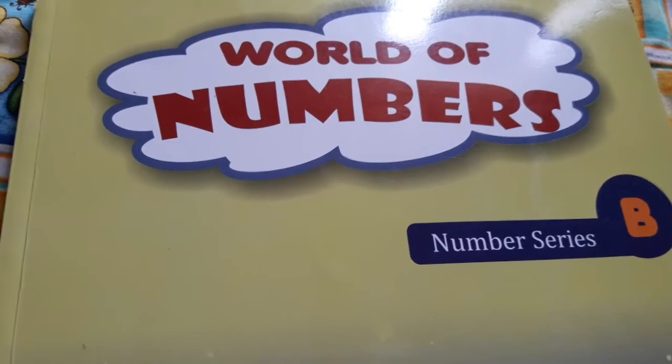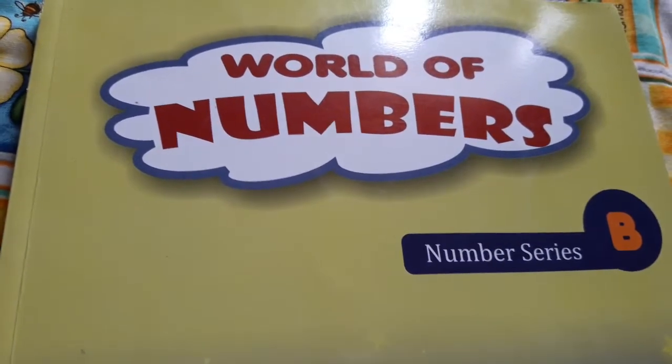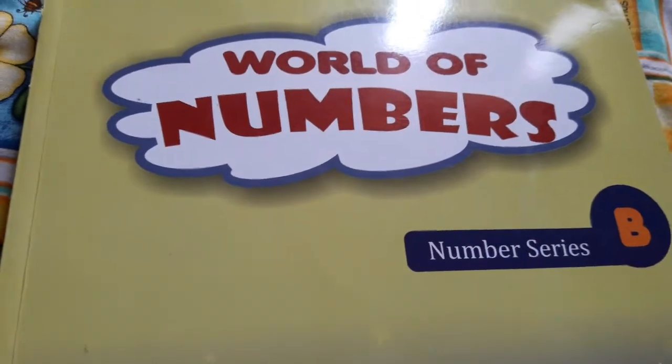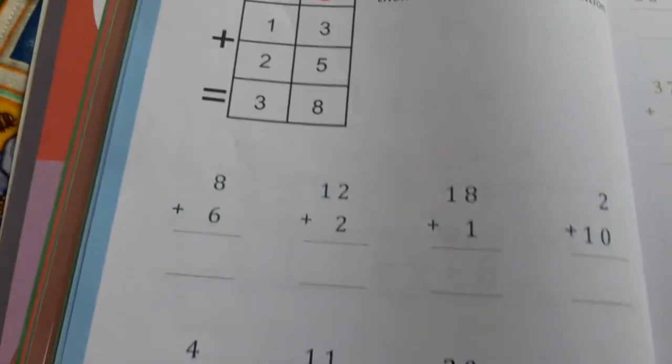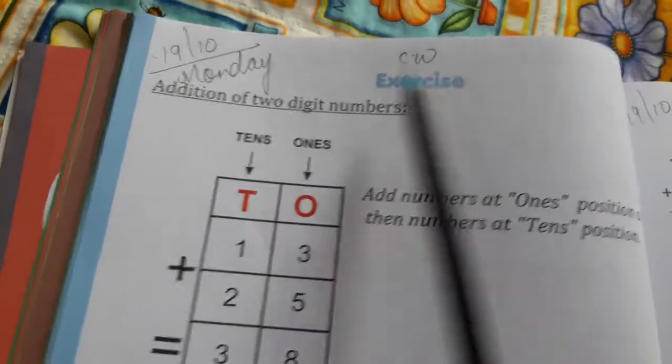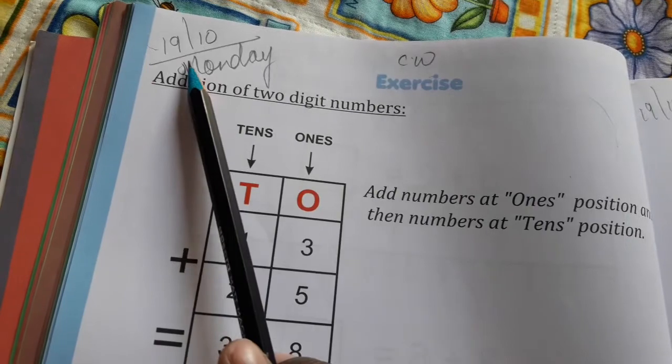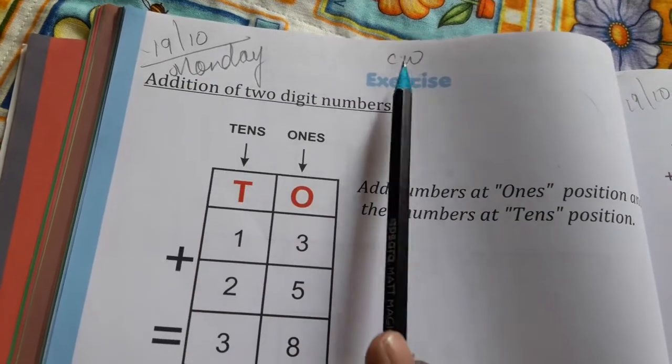Now children, take out your maths book, World of Numbers, and turn to page number 52. Today's date is 19th October, day Monday, CW.